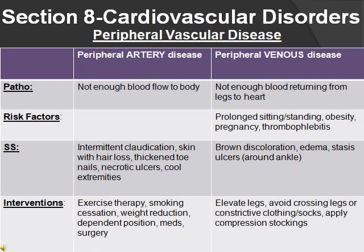Signs and symptoms of peripheral artery disease include intermittent claudication, skin with hair loss, thickened toenails, necrotic ulcers, and cold extremities, because the body is not getting enough blood. Peripheral venous disease shows brown discoloration, edema, stasis ulcers especially around the ankles. Interventions for peripheral artery disease: exercise, stop smoking, reduce weight, be in a dependent position, medication, and surgery. For peripheral venous disease: elevate the legs, don't cross legs, no constrictive clothing or socks, and wear compression stockings.